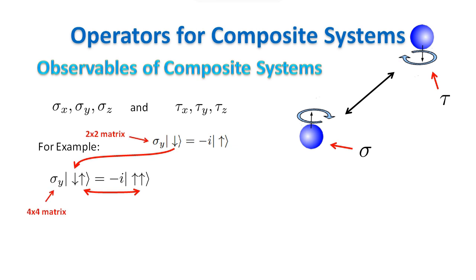Note that, with abusive notation, we have used the same symbol for the operator acting on one particle and the one acting on the composite system, because they do exactly the same thing. However, they are completely different operators, represented by different matrices, and acting on different spaces.